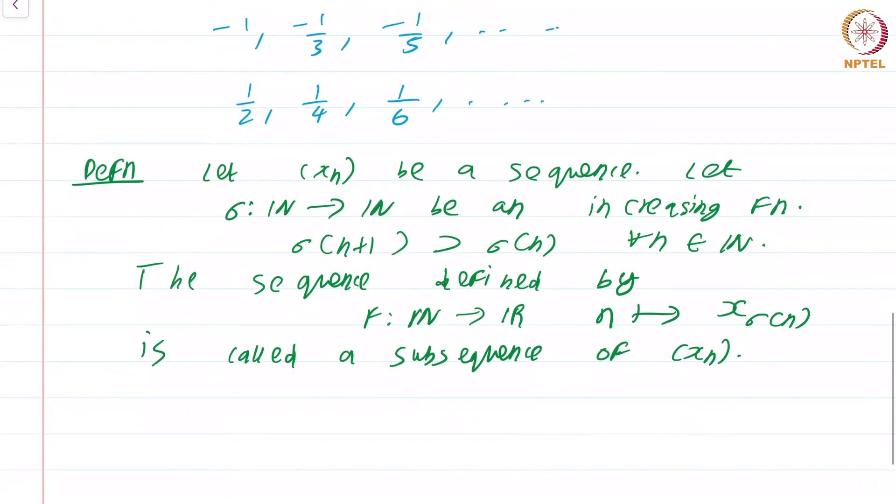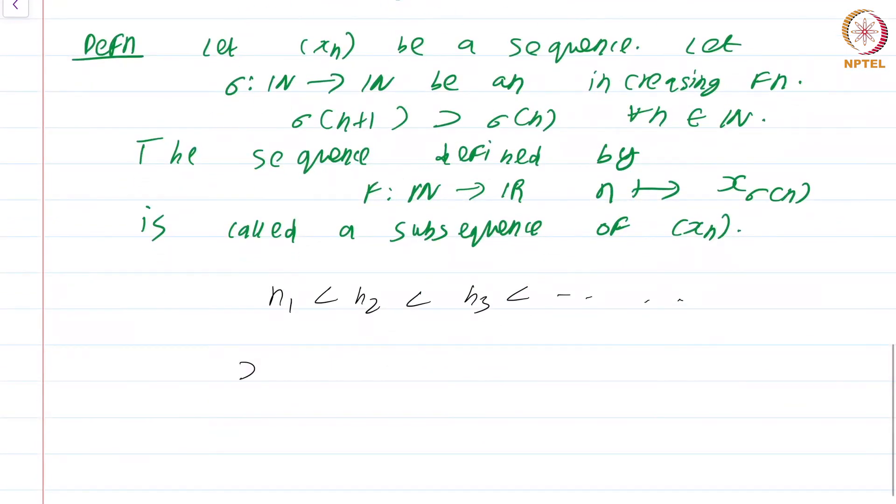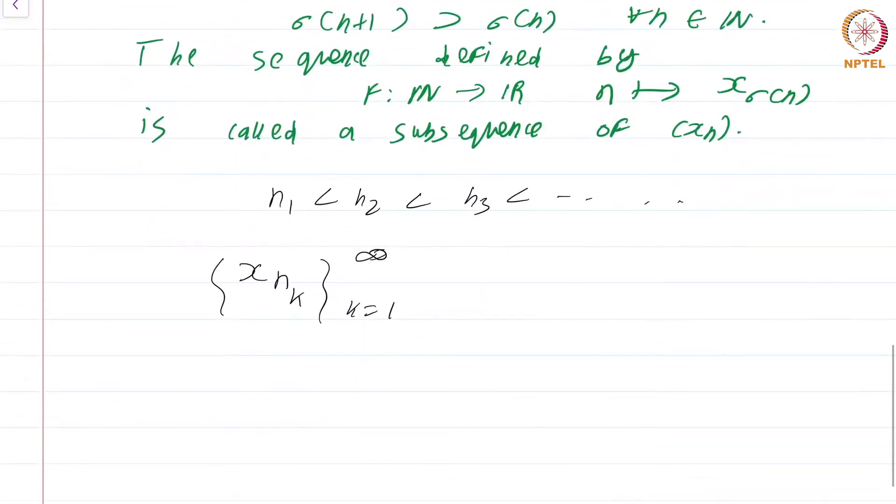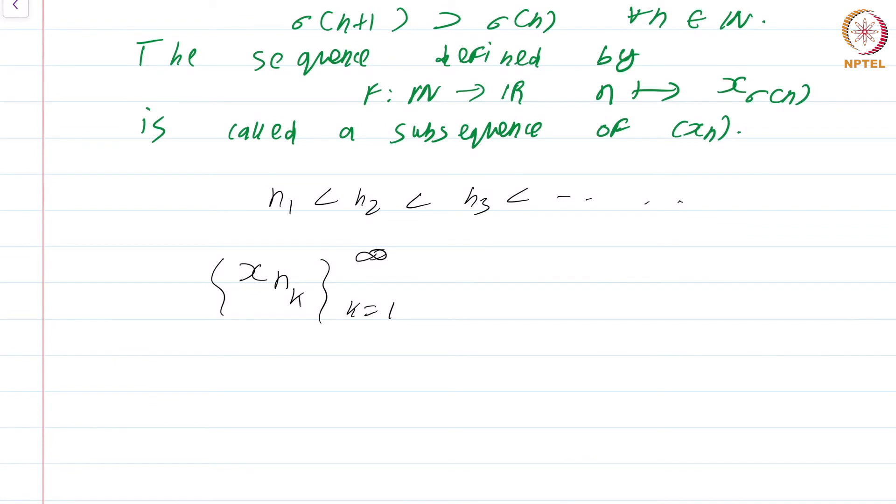Then the sequence defined by f from n to R, n mapping to x_sigma(n), is called a subsequence of x_n. If you think about this definition, all it is saying is that a subsequence is nothing but terms selected from a sequence, but in order. You can ignore some terms, but you have to go in the same order. You cannot change the order of the terms appearing in a subsequence. Another way to think of a subsequence is like this: you are given numbers n1 less than n2 less than n3, and you are considering the new sequence x_n_k where k runs from 1 to infinity.